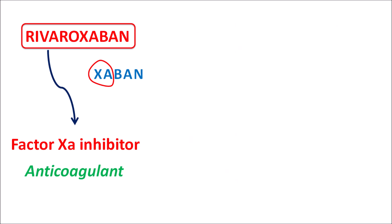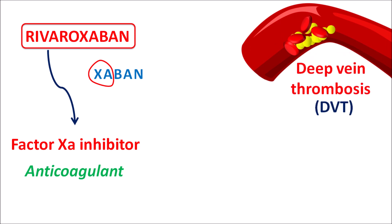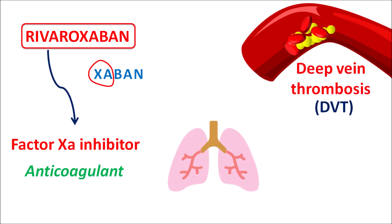Similarly, this drug can be used in patients who have the risk of deep vein thrombosis, which may lead to pulmonary embolism. So again, in such conditions rivaroxaban can be used.